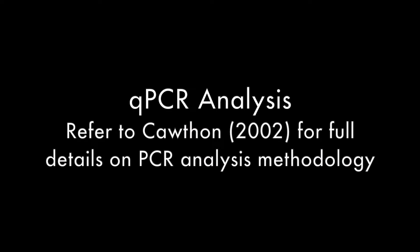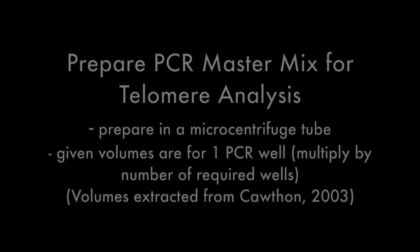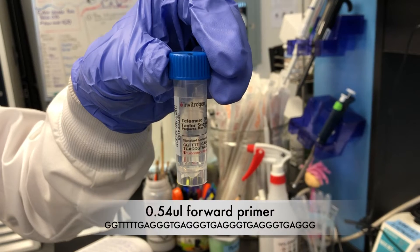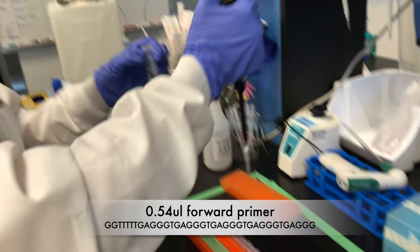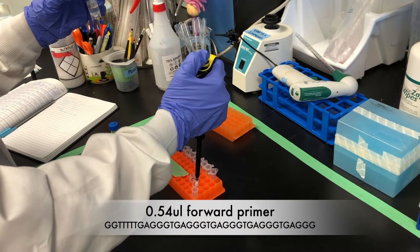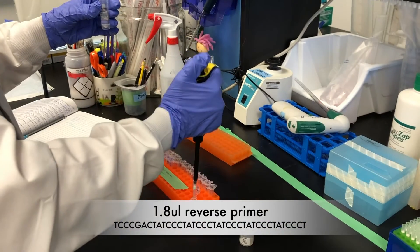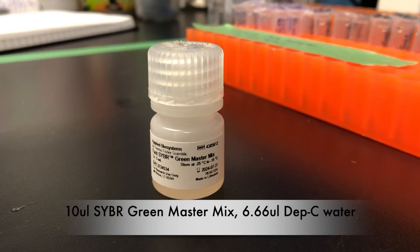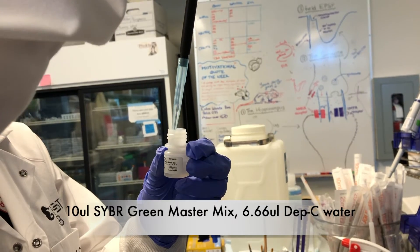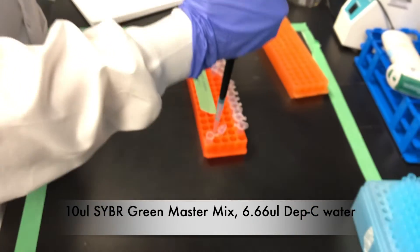The following method was extracted from Cawthon 2002. The following volumes are for 1 PCR plate well for the telomere analysis: 0.54 µL forward primer, 1.8 µL reverse primer, 10 µL SYBR Green master mix, and 6.66 µL Depsy water.